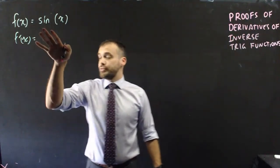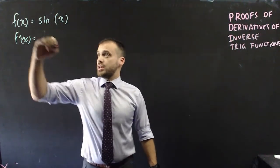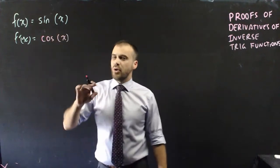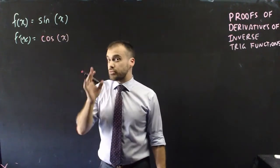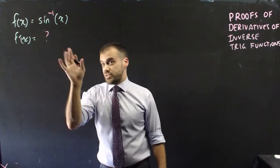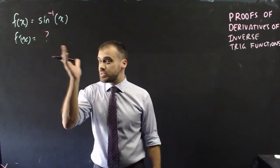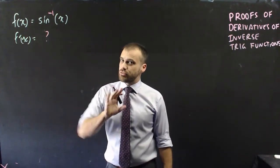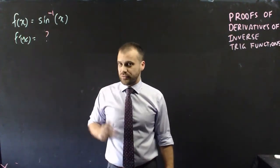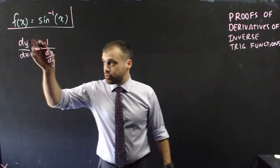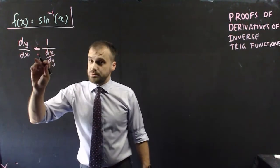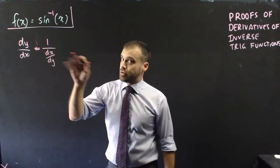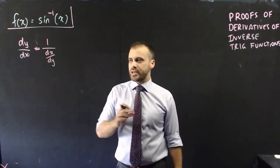You should already know that the derivative of sine x is cos x. But what about the derivative of inverse sine x? What's the answer to that? To do that, we use a really, really clever fact: the derivative of y with respect to x is equal to 1 over the derivative of x with respect to y.